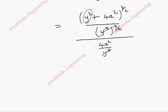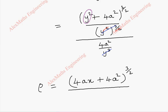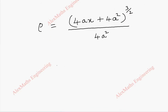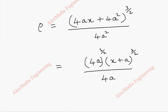Finally, we are going to get rho equal to 4ax plus 4a square, whole power 3 by 2. From this, we can take 4a common, so remaining will be x plus a. But we have this power 3 by 2, so I write this separately, divided by 4a square.